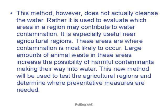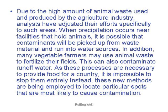Large amounts of animal waste in these areas increase the possibility of harmful contaminants making their way into water. This new method will be used to test the agricultural regions and determine where preventative measures are needed. Due to the high amount of animal waste used and produced by the agricultural industry, analysts have adjusted their efforts specifically to such areas. When precipitation occurs near facilities that hold animals, it is possible that contaminants will be picked up from waste material and run into water sources. In addition, many vegetable farmers may use animal waste to fertilize their fields, which can also contaminate runoff water.